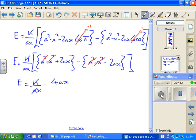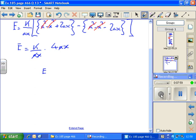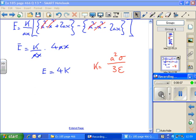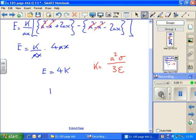The a's cancel and the x's cancel. So finally, e equals 4k. And looking back to see what we let k be, we let k equal a squared sigma over 3 epsilon. So putting this back in, e equals 4a squared sigma over 3 epsilon.